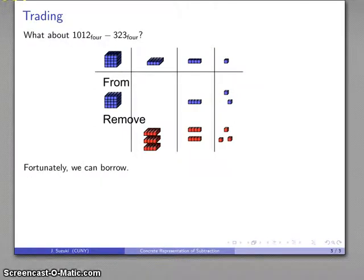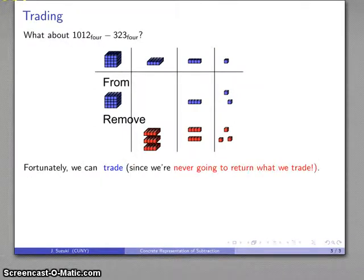Fortunately, I can borrow. Well, actually, I don't want to use that term anymore. You might have been told to borrow, but the reality is, you're never going to return what you borrow. It's gone, so the proper term is, we're going to trade, and we're going to use the fact that our trade rate, we're working base 4, is 4 for 1. So any one of these I trade, I'm going to get 4 of the next thing over.